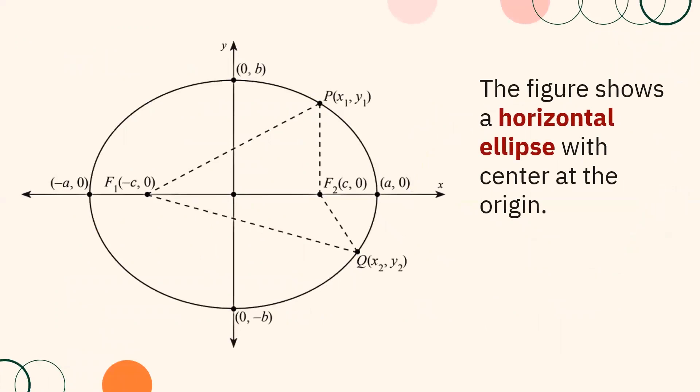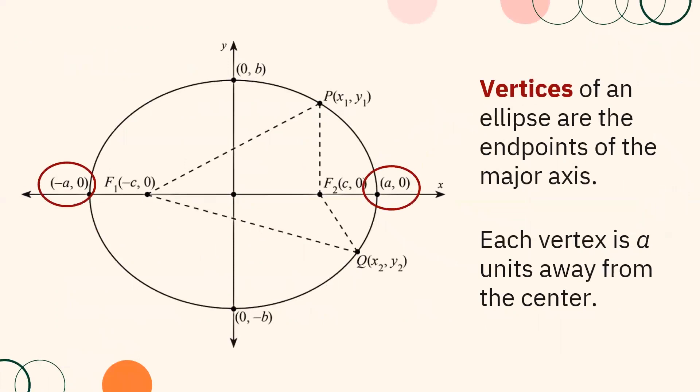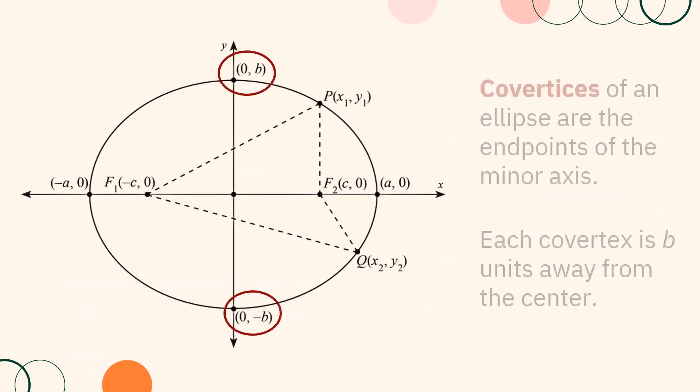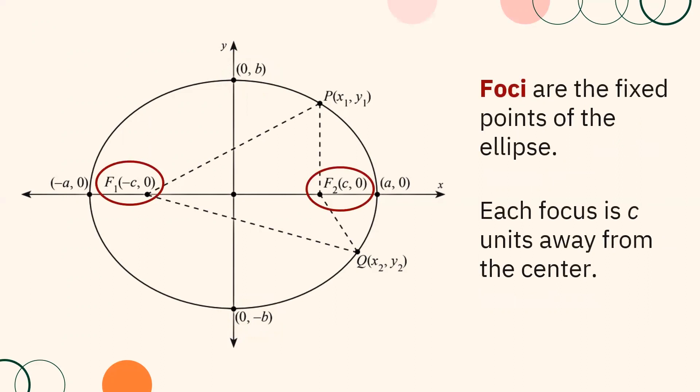The figure shows a horizontal ellipse with center at the origin. The center is the middlemost point of an ellipse. Vertices of an ellipse are the endpoints of the major axis; each vertex is A units away from the center. Co-vertices of an ellipse are the endpoints of the minor axis; each co-vertex is B units away from the center. Foci are the fixed points of the ellipse; each focus is C units away from the center.